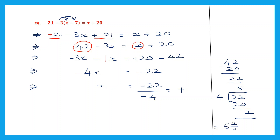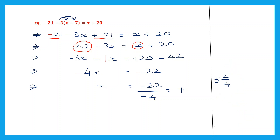5 remainder 2 by 4. I can leave my whole number as it is, but I can reduce my fraction to the lowest term. 2 by 4 — I can divide both by 2. So I get 1 by 2. So I have reduced that to the lowest term. So now my answer is 5 and 1 by 2. So we have found the value of x. x is equal to 5 1/2. This is our answer.